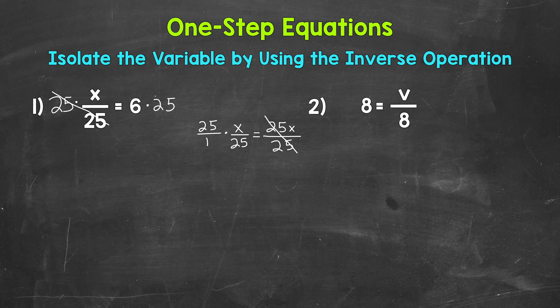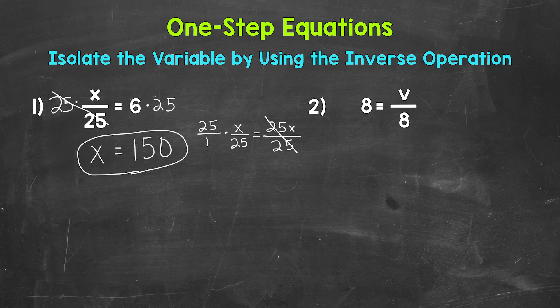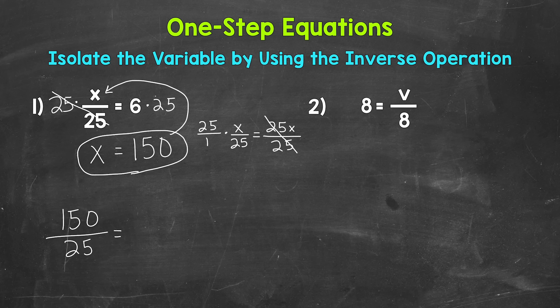So we have x on the left side equals, and then on the right side, 6 times 25, that equals 150. x equals 150. That's our solution. Now we can always check a solution by plugging it into the original equation. So let's plug 150 in for x and see if this works. 150 divided by 25 equals 6. 150 divided by 25 does equal 6, so that's the correct solution. x equals 150.